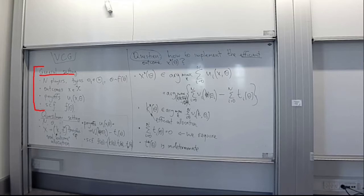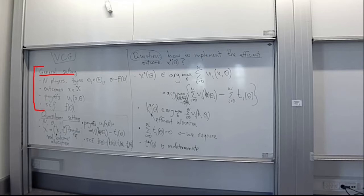In this general setting we have some number of players. Players have their respective types, jointly distributed with some distribution f which is arbitrary. There is also an arbitrary set of outcomes x and an arbitrary collection of payoff functions. And given all this arbitrary environment we had some goal, which is to implement some once again arbitrary social choice function f of theta.